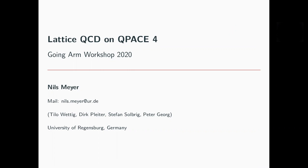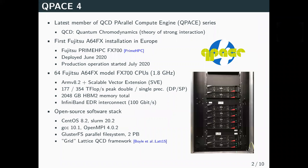Lattice QCD is a computer-friendly formulation of the theory of the strong interaction — it's particle physics. QPACE4 is the latest member of our QCD parallel compute engine series. As one can see in the photo, it's a small-scale supercomputer installation. QPACE4 features 64 A64FX model FX700 CPUs from the Fujitsu Prime HPC series. The nodes are interconnected by InfiniBand HDR. The machine was deployed in June, and production operation started in July.